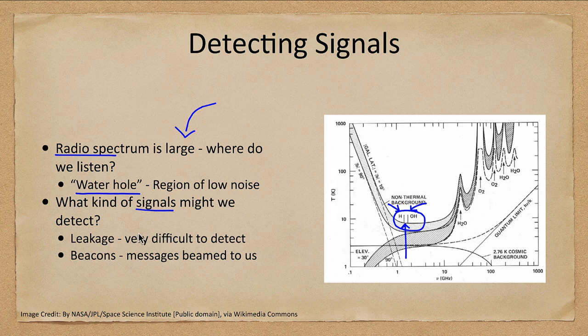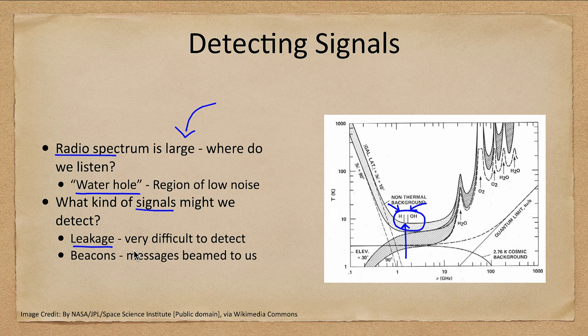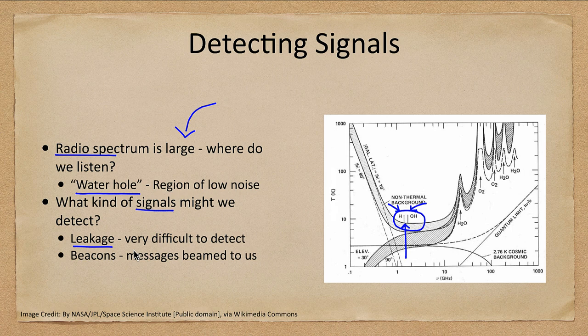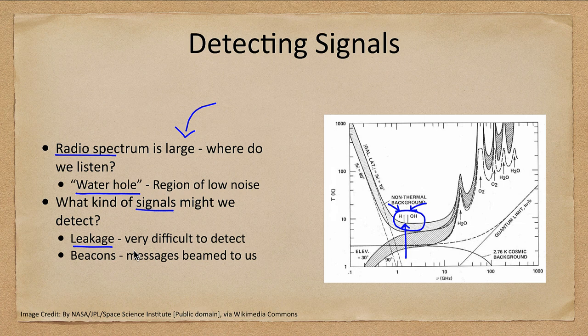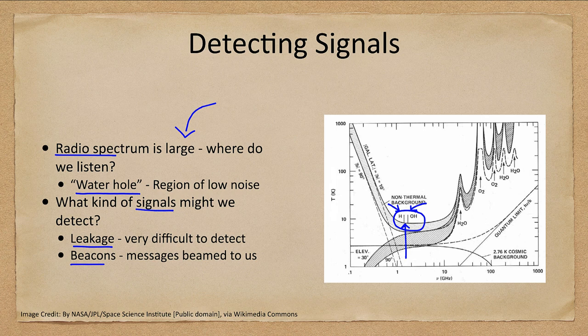What kind of signals might we detect? Well, leakage, just general signals that are being broadcast around that planet that would also go out into space, those would be very difficult to detect. Things like radio or TV shows that have been broadcast, they would be very difficult to detect elsewhere just because they weren't broadcast there. Beacons, actually messages that are sent, would be much easier to detect. They're a much stronger signal and they are specifically sent in one direction, not just generally out in space.